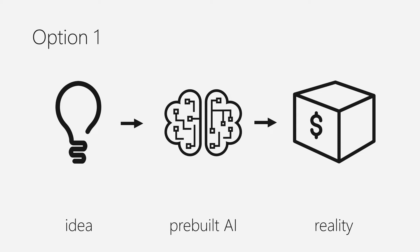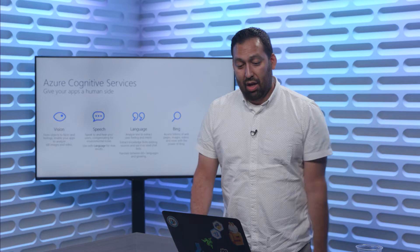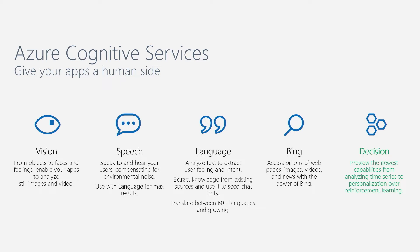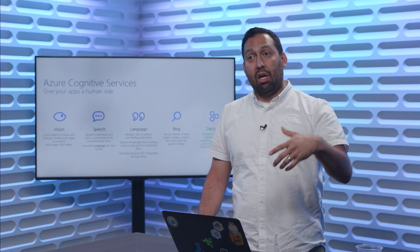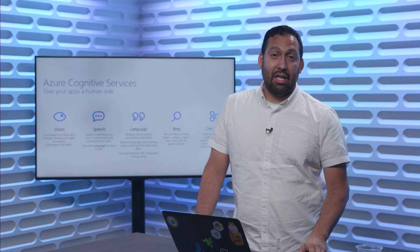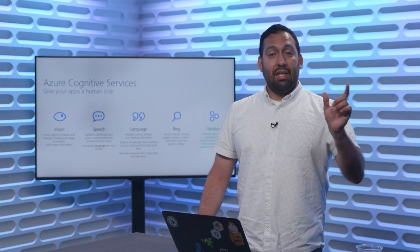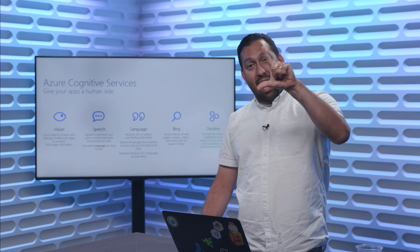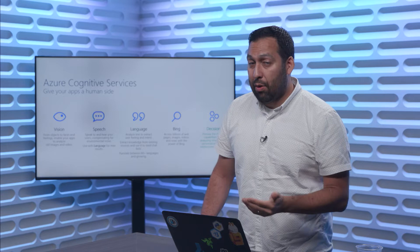The first option is you can use models that have already been built. You can do this today — it's pretty easy. There are a lot of machine learning models that solve a bunch of specific tasks. Vision, speech, language — if you think about computer vision, looking at a picture and deciding what's inside is a difficult thing to program, but it's pretty easy to give the computer millions of images, tell it what's inside, and have it produce an algorithm. It's been done so many times it's basically a service. Let's do a little demo with cognitive services.